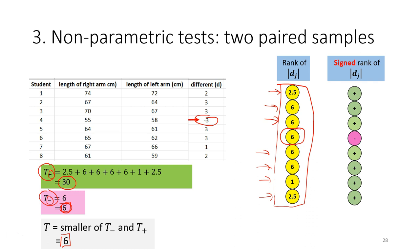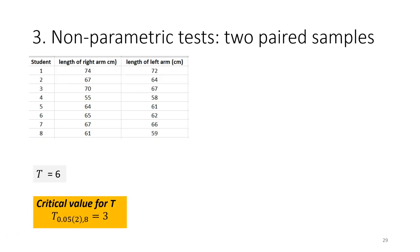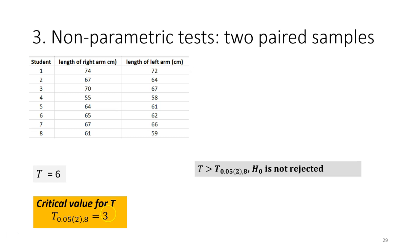The final step is to compare the test score with the critical value. The critical value is 3. We reject the null hypothesis only if the test score is smaller than the critical value. Since our test score of 6 is larger than the critical value of 3, we do not reject the null hypothesis. This means there is no significant difference between the left and right arm lengths.